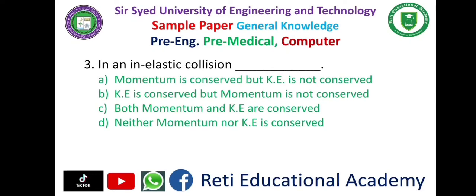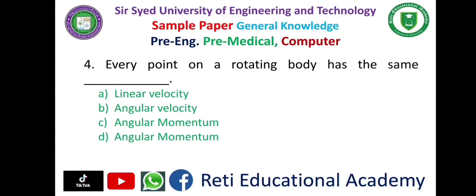Question 3: In an elastic collision — A. Momentum is conserved but kinetic energy is not conserved, B. Kinetic energy is conserved but momentum is not conserved, C. Both momentum and kinetic energy are conserved, D. Neither momentum nor kinetic energy is conserved — and the correct answer is A. Momentum is conserved but kinetic energy is not conserved. Question 4: Every point on a rotating body has the same — A. Linear velocity, B. Angular velocity, C. Angular momentum, D. Angular momentum — and the correct answer is B. Angular velocity.